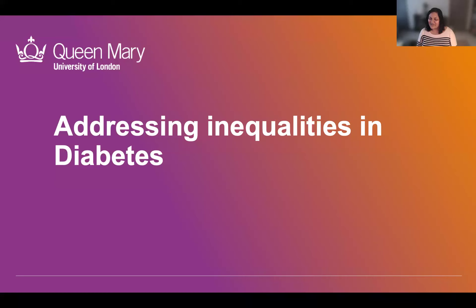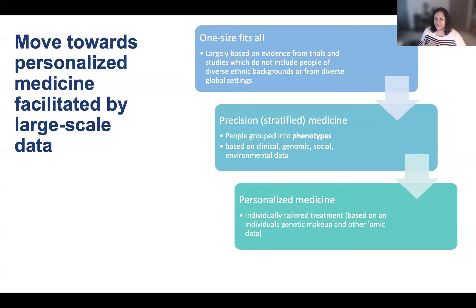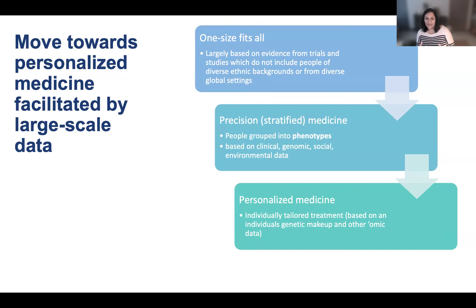Turning now to diabetes, which is my day job outside of COVID-19 work, there is also a big drive to address inequalities in this space. We are moving towards personalized medicine approaches, thanks to the availability of large-scale linked multimodal data. A lot of the evidence for diabetes care is based on studies which do not include people of diverse ethnic backgrounds or from diverse global settings. However, we are now moving towards precision or stratified medicine, where we can group people into certain phenotypes or subgroups based on shared clinical, genomic, social, and environmental characteristics — with the hope that this will move us towards truly personalized medicine with individually tailored treatment.